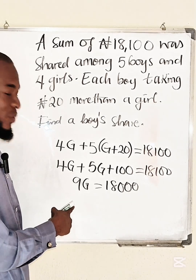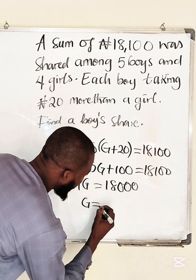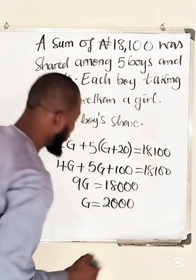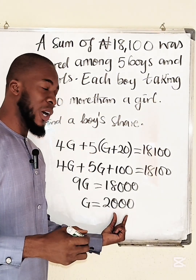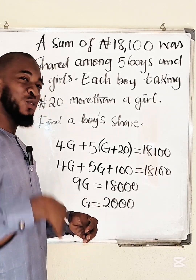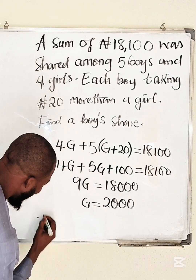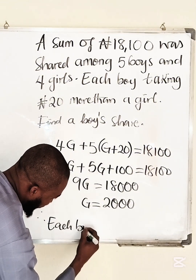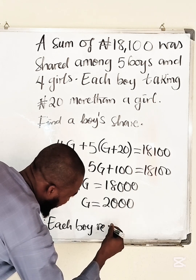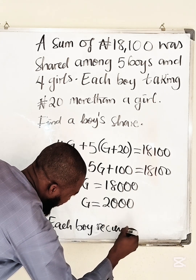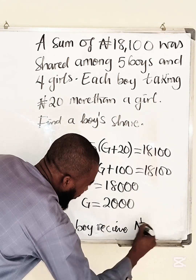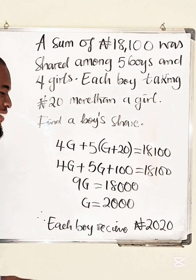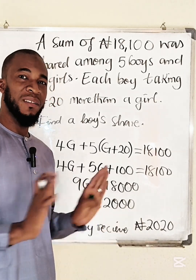Dividing both sides by 9, we get g equal to 2000. So each girl receives ₦2000. A boy receives ₦20 extra, therefore each boy's share is ₦2000 plus ₦20 extra. That is the share of each boy — as simple as that.